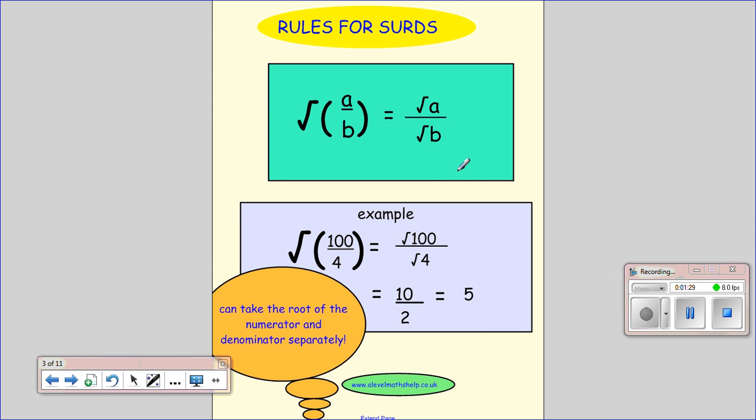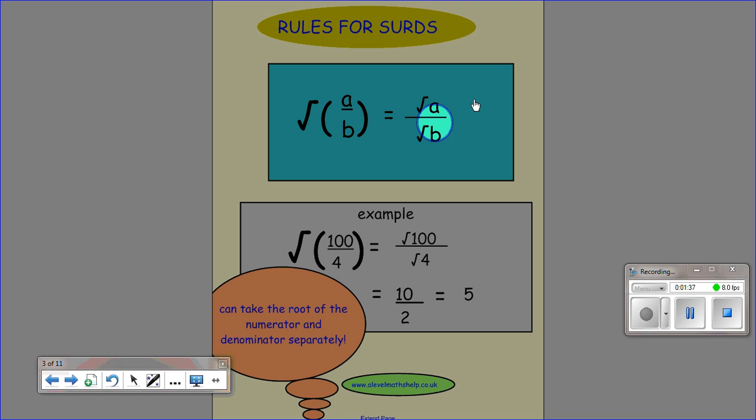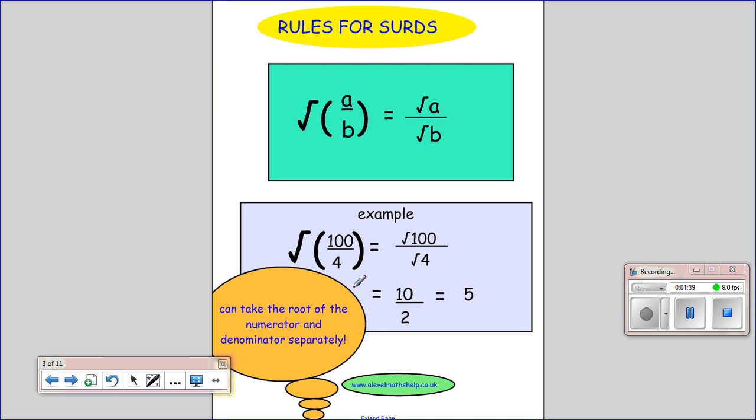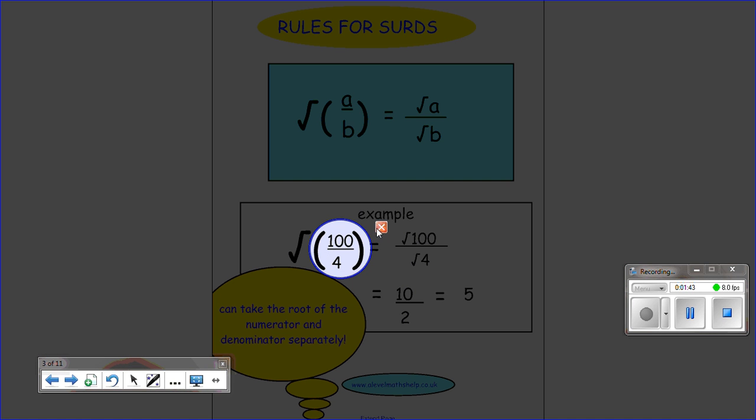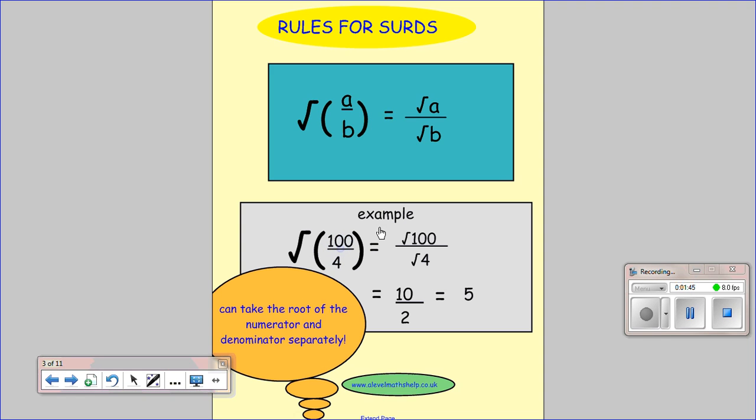The second rule is about division. When you have a number which is one number divided by another, you can take the square root of the numerator divided by the square root of the denominator. So looking at this example here, we've got 100 over 4, which would be 25. If we took the square root of 25, we would get 5.